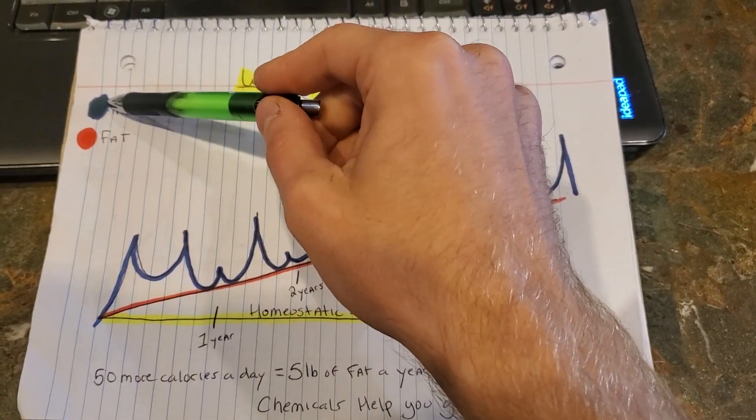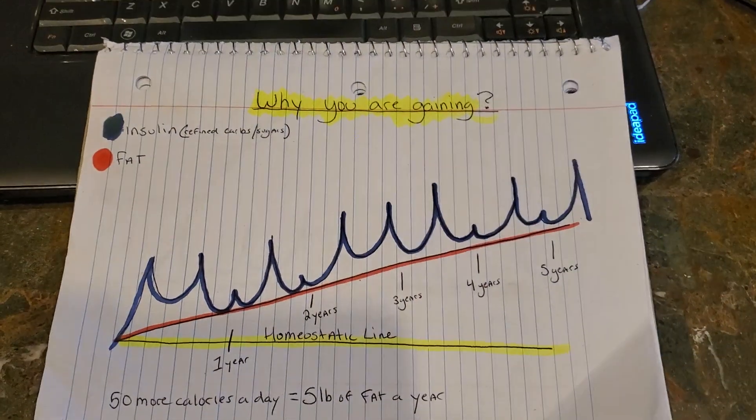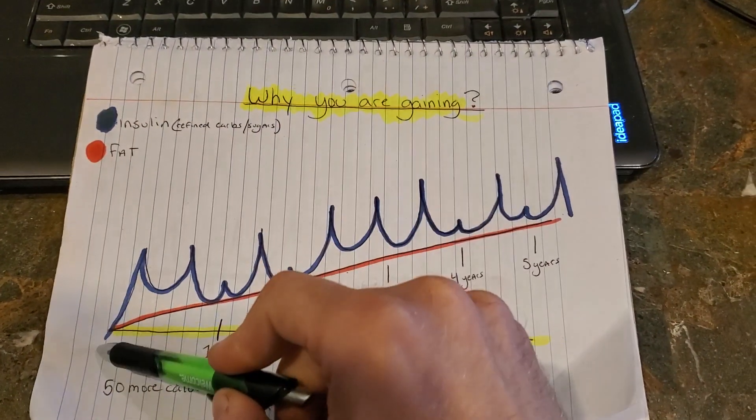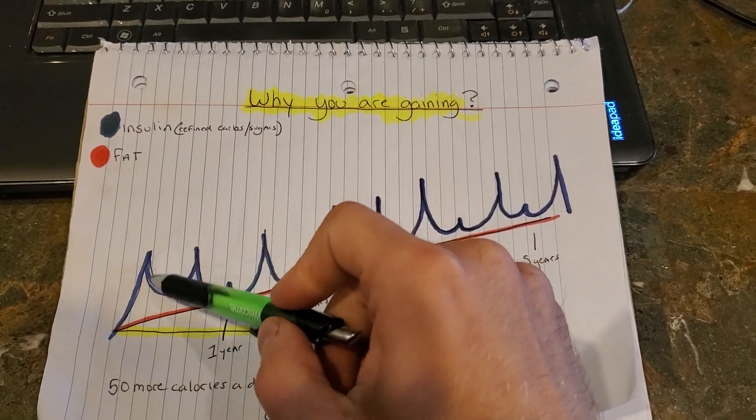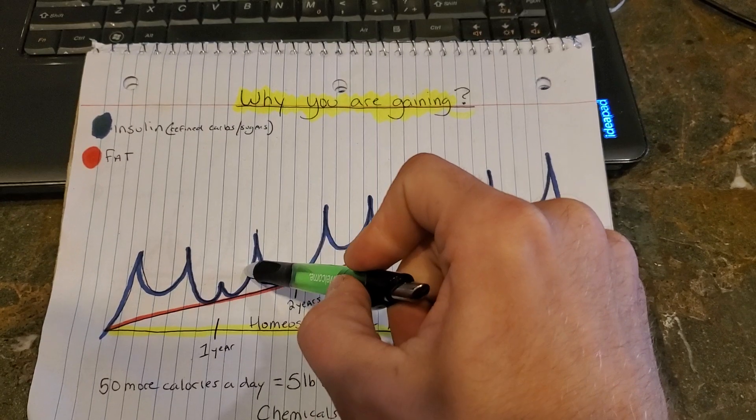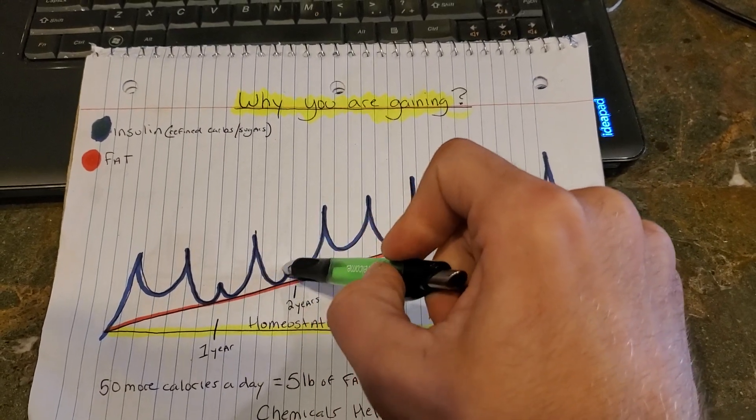So actually I put yellow there, but this is blue and this is red. So insulin. When you're eating in the morning, you're spiking your insulin. You're not allowing your body to get back to its fat burning state.